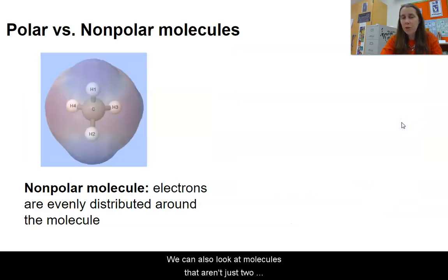We can also look at molecules that aren't just two atoms. So here we've got methane, which is carbon with four hydrogens, and this is that tetrahedral geometry that we looked at before. And because carbon and hydrogen have very similar electronegativities, we don't really get much difference in charge on one side versus the other side. And because all three of these things are pulling equally away from each other, then that symmetry also makes this molecule nonpolar. So our electrons are evenly distributed all around. We don't have one side that's different from another.